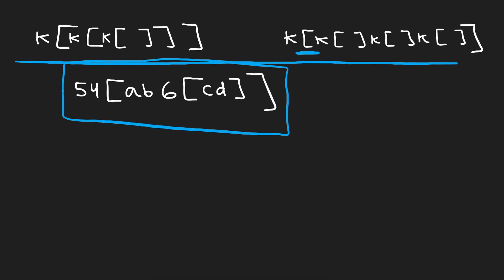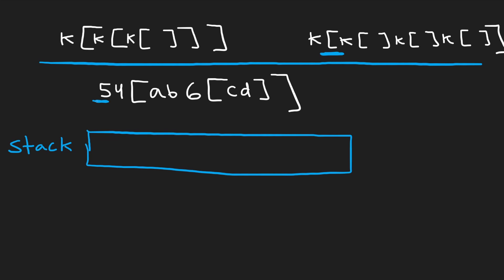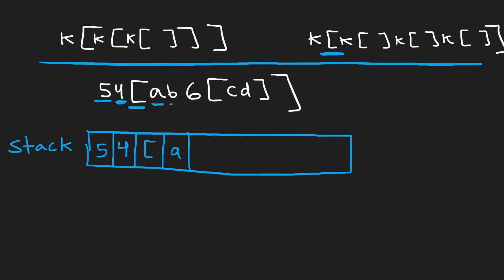Let me do a quick walkthrough of what the stack solution would be. Suppose we had some nested brackets like these. We go character by character and add to the stack. We'd see the 5, recognize it's a digit, and add it. Then we see the 4, add that to the stack. Then we get to an opening bracket — we add it to the stack, recognizing we are inside a sub-problem now. We keep going, adding lowercase a, lowercase b, then a digit 6, then another opening bracket.